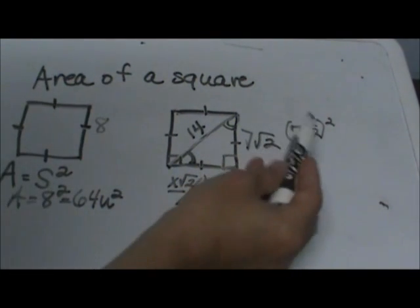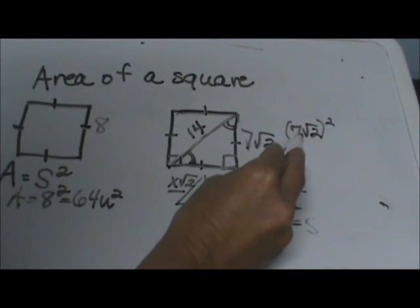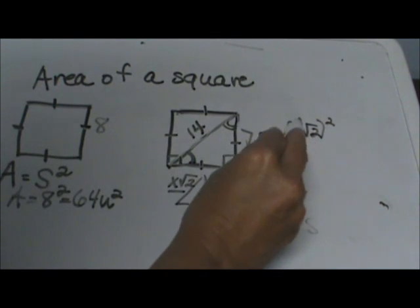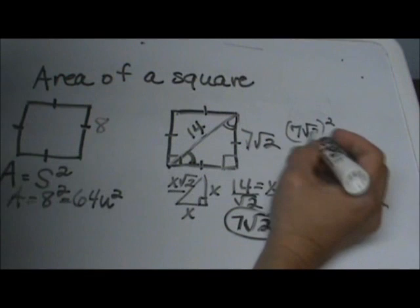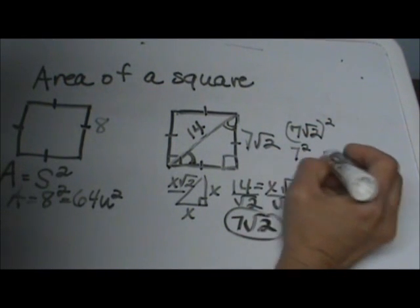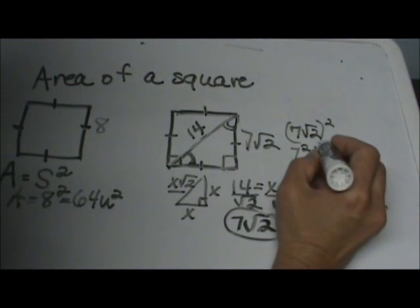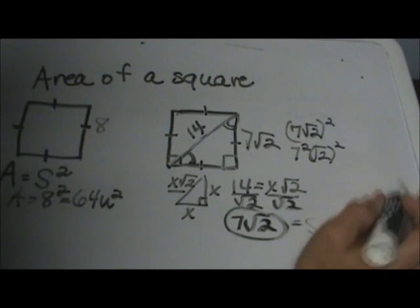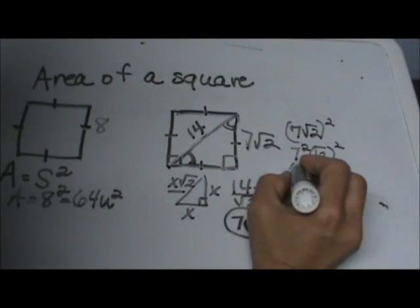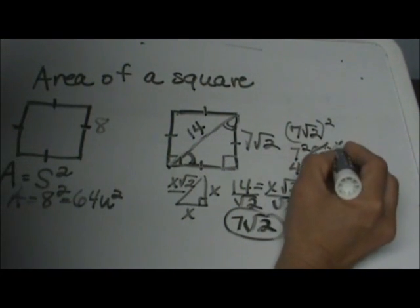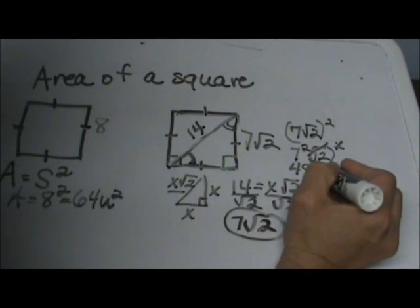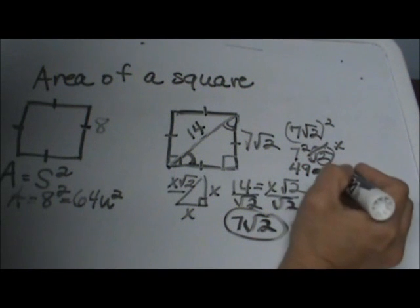When you square a number that has both a constant and a square root, you're going to square each part. So you're going to square the 7, so that's 7 squared, and you're going to square the square root portion. So 7 squared is 49. The square root of 2 squared, they cancel each other because they're opposite operations, so you're just left with a 2.